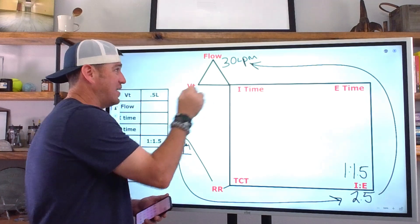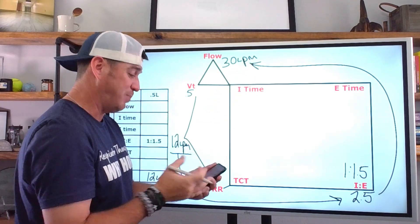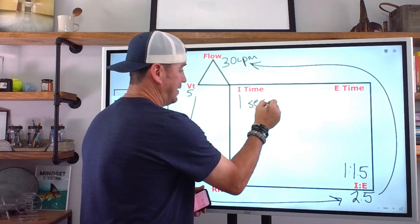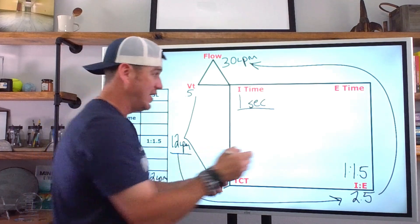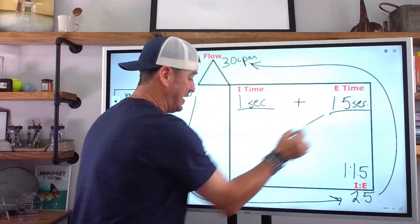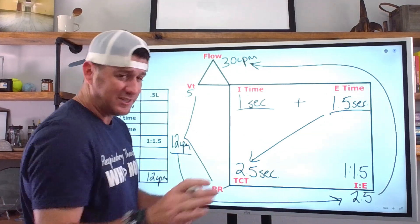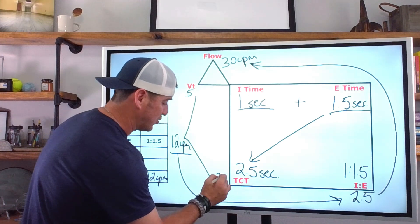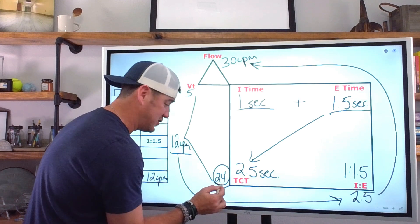Now we can get I-time because we know tidal volume and flow. We convert flow to liters per second: 30 divided by 60 is 0.5 liters per second. Then 0.5 divided by 0.5 gives us a 1-second I-time. One second times 1.5 gives us a 1.5-second E-time. One plus one and a half equals total cycle time of 2.5 seconds. Then 60 divided by 2.5 means we have a respiratory rate of 24 breaths per minute.